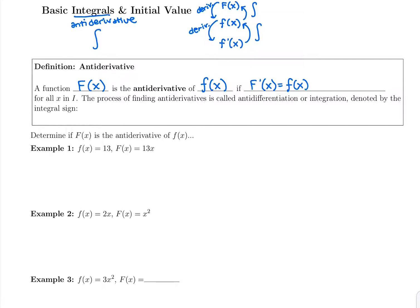The process for finding antiderivatives is called antidifferentiation or integration, and this is denoted by the integral symbol. So we would take the integral, or take the antiderivative of lowercase f of X — the dx means with respect to X — and we would get capital F of X plus C. That long S-looking thing means take the antiderivative of lowercase f of X and you'll get capital F of X plus C. I'll explain that plus C in just a moment.